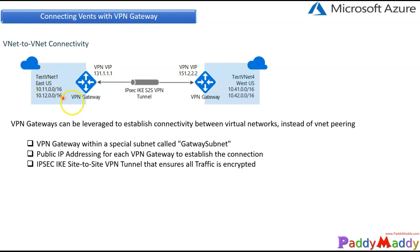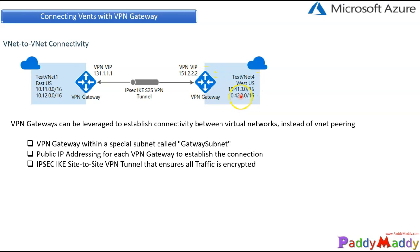In the lab, we are going to create a separate VNet and a gateway subnet, then introduce the VPN Gateway. When configuring the VPN Gateway, we get a primary public IP, and optionally a secondary public IP. We will do the same for another region — create a different VNet, a gateway subnet, introduce a VPN Gateway, and assign a public IP.